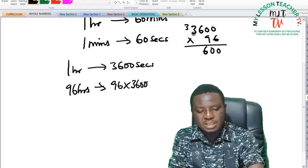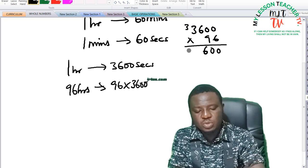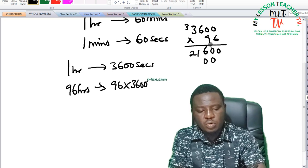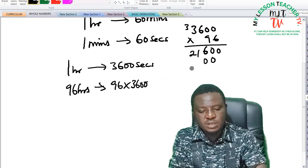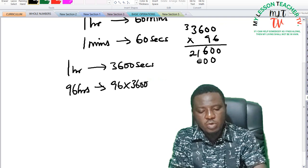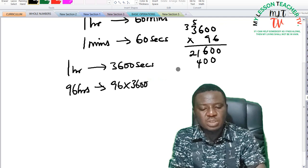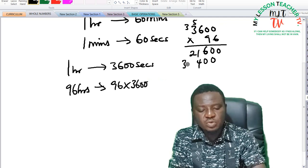You write down 6 and carry 3. This is 18, 19, 20, 21. 9 times 6 is 54. You write down 4 and carry 5.